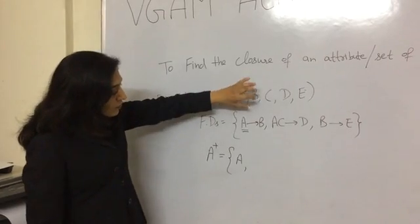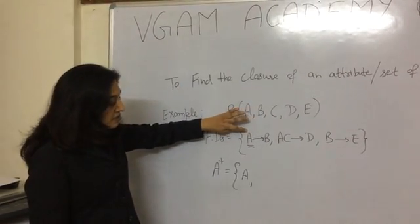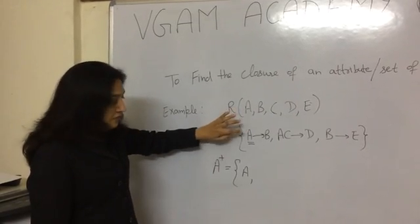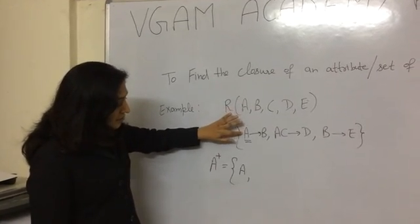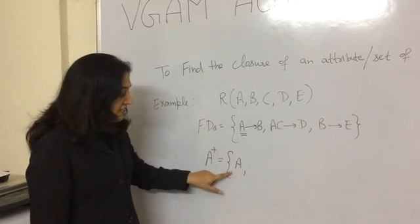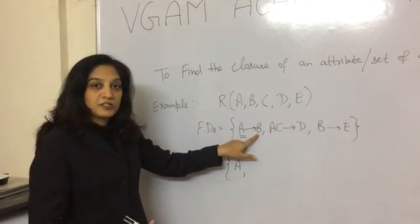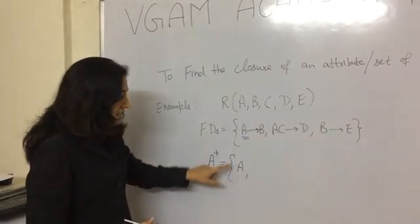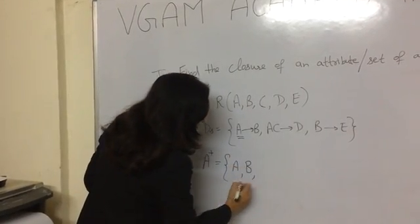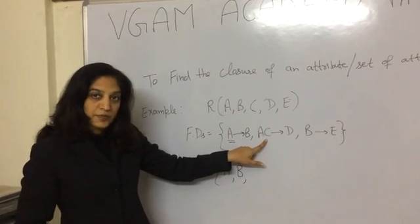Now we will look at the first functional dependency and check its left side — it says A. We will see if A is there in the set. Yes, it is there. So we will put its right side also in the set. As A is there, we will put B here. Now move to the next functional dependency.